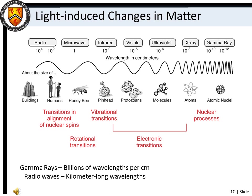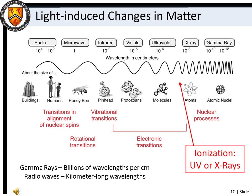Interactions between light and matter occur throughout the electromagnetic spectrum. Absorption or emission of light in the microwave region causes changes in the rotational states of molecules. Vibrational excitations typically occur when light in the infrared region is absorbed, and absorption of visible or ultraviolet light can cause electronic excitations. The highest energy process that we will study is ionization, which generally requires absorption of short wavelength ultraviolet light. The lowest energy process will be transitions between nuclear spin states, typically induced with radio waves.